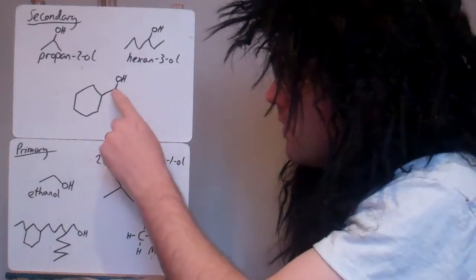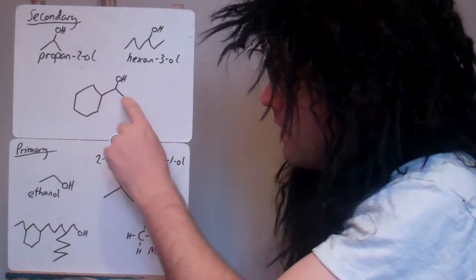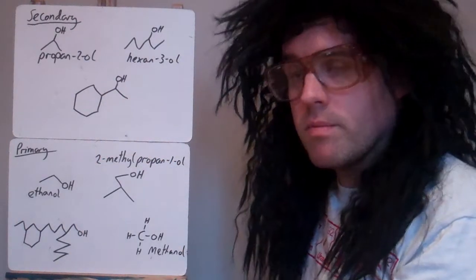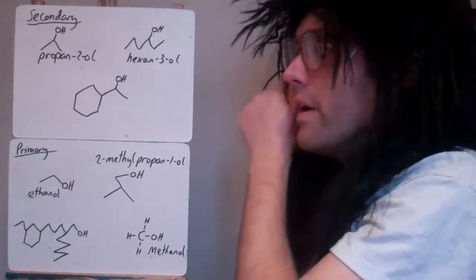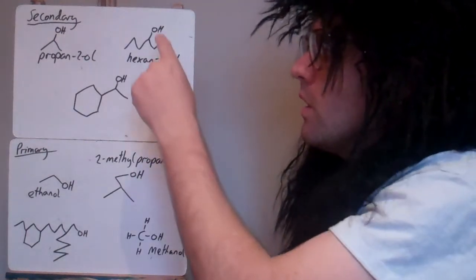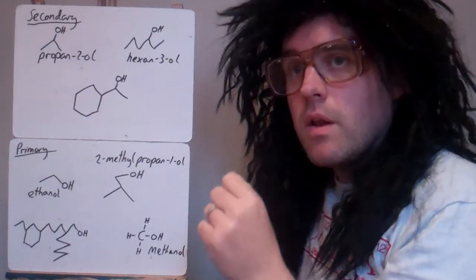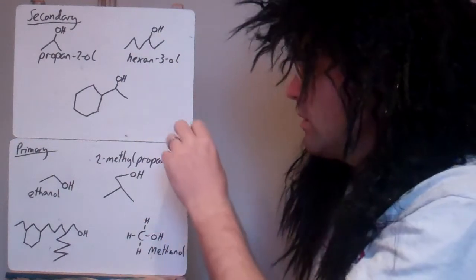This one here — this carbon is attached to that one and that one, so again it's secondary. So in a secondary alcohol, the carbon that's attached to the OH can only be attached to 2 other carbons.